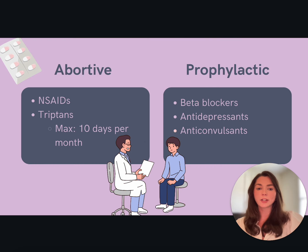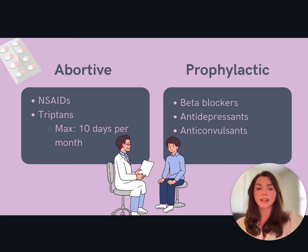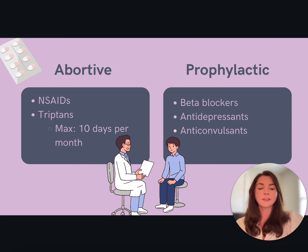How are we going to treat migraines? It depends on a few different factors. For infrequent, mild migraines, a reasonable first-line medication is an NSAID such as ibuprofen (Motrin) or naproxen (Aleve). For moderate to severe headaches, our first-line medication is going to be a triptan, like sumatriptan or Imitrex. Triptans are an effective abortive medication when taken at the first sign of a migraine. However, triptans should not be used more than 10 days a month due to the risk of overuse headache.